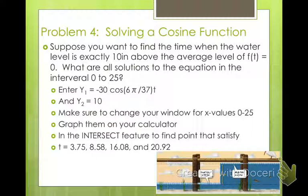This is at 3.75, 8.58, 16.08, and 20.92. And what this means is this is how many hours it is after 10.30 a.m. So three hours and 45 minutes after 10.30 a.m. is the first time it's 10 inches above our medium value.